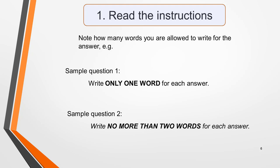First, read the instructions carefully, paying particular attention to how many words you are allowed to write for the answer, as this does vary. The instructions for our sample questions state that you must write only one word for each answer. The instructions for the caveman diet question, on the other hand, state that you must write no more than two words for each answer. If you write more than the number of words required, your answer will be marked incorrect, even if the information you give is correct.